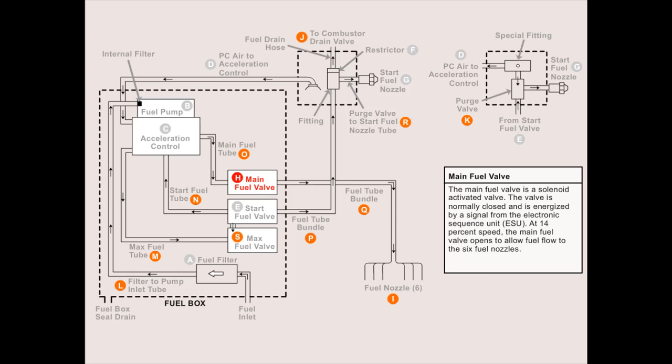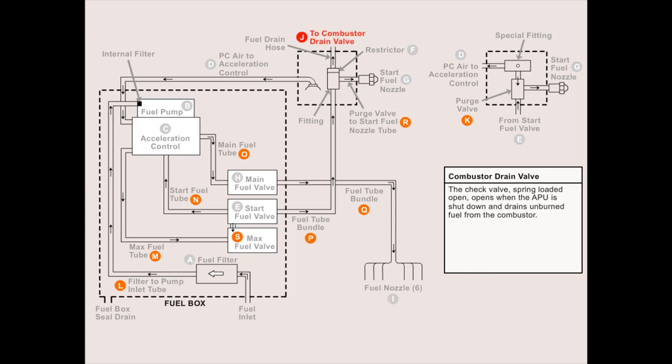The main fuel valve is a solenoid activated valve. The valve is normally closed and is energized by a signal from the electronic sequencing unit, the ESU. At 14% speed, the main fuel valve opens to allow fuel flow to the six fuel nozzles. The six fuel nozzles are mounted in bosses on the combustor assembly and are connected to form the fuel manifold assembly. The combustor drain valve, a check valve spring loaded open, opens when the APU is shut down and drains unburned fuel from the combustor.